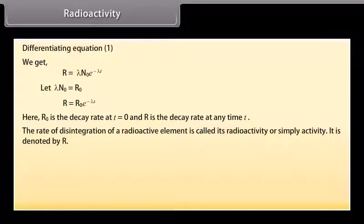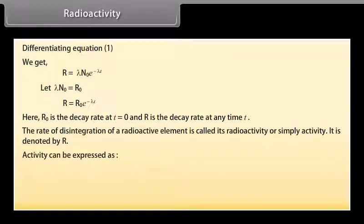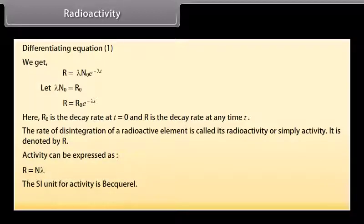The rate of disintegration of a radioactive element is called its radioactivity or simple activity. It is denoted by R. Activity can be expressed as R is equal to N lambda. The SI unit for activity is becquerel. 1 becquerel is equal to 1 Bq is equal to 1 decay per second.